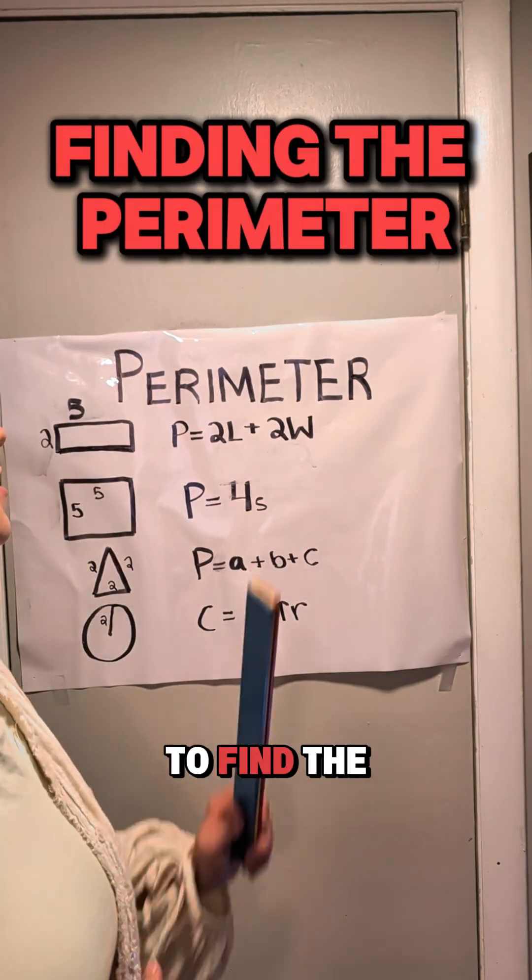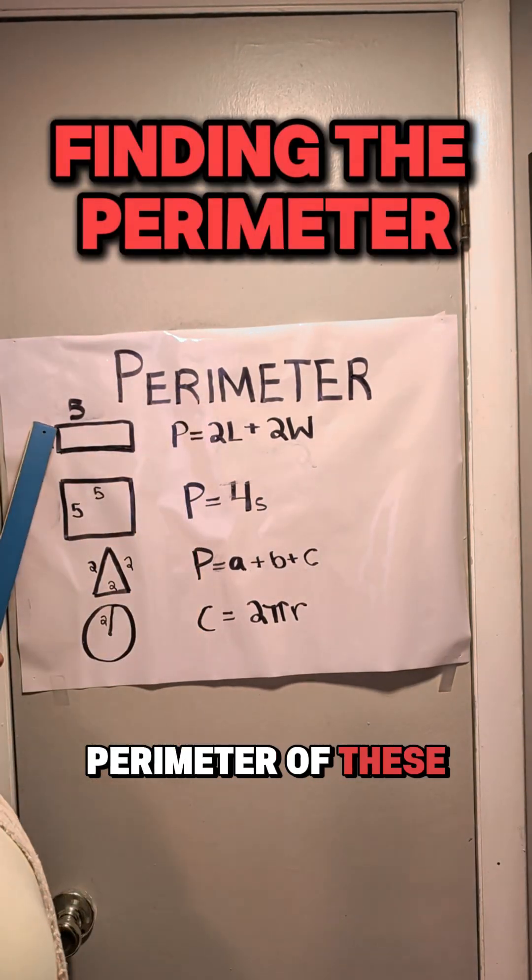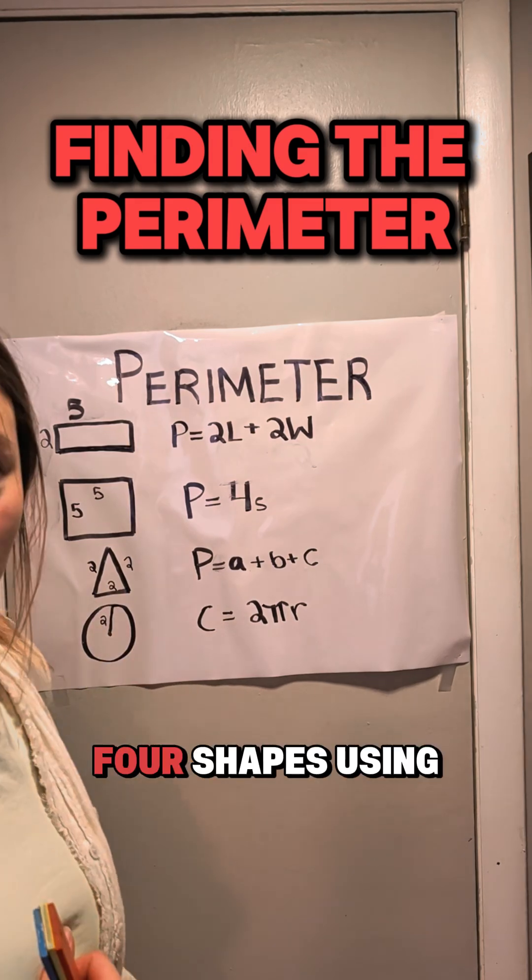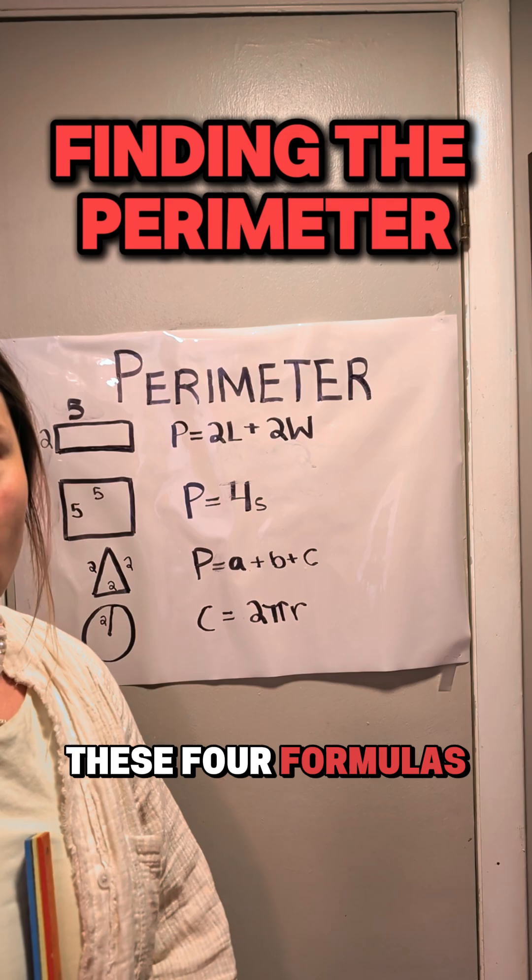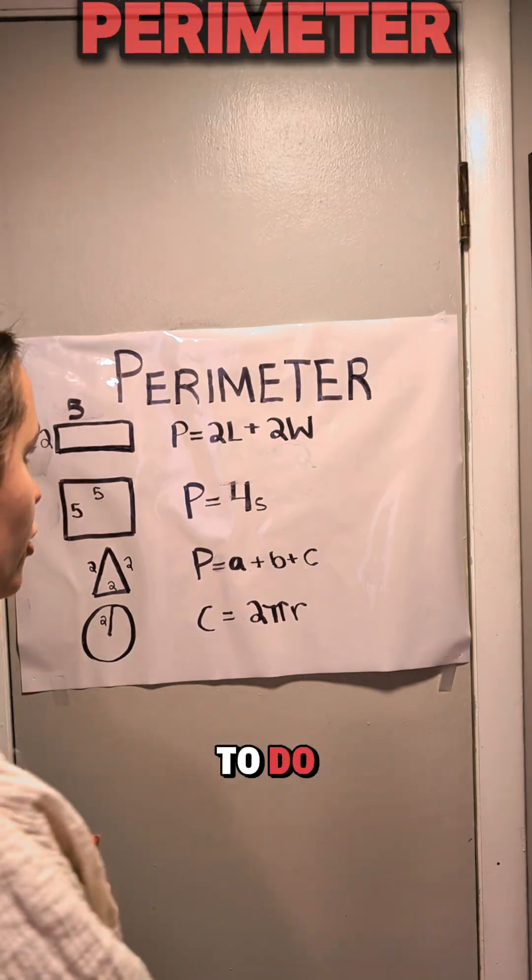Okay, today we are going to find the perimeter of these four shapes using these four formulas. I'm going to walk you through step by step what to do.